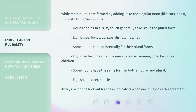While most plurals are formed by adding S to the singular noun — like cats, dogs — there are some exceptions. Nouns ending in S, X, Z, SH, or CH generally take ES in the plural form. For example: buses, boxes, quizzes, dishes, matches. Some nouns change internally for their plural forms — man becomes men, woman becomes women, child becomes children.